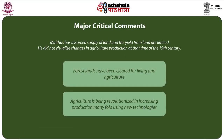One major criticism is that Malthus assumed the supply of land and yield from land are limited. He did not visualize changes in agricultural production during the 19th century — for instance, forest lands were cleared for living and agriculture. Agriculture was revolutionized, increasing production manifold using new technologies like the system of rotation of crops, use of chemical fertilizers, and improvements in plant and animal breeding. Malthus also underestimated industrial development, which reduced dependence on agriculture.